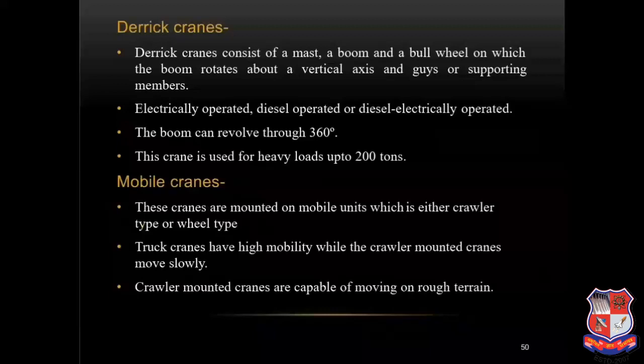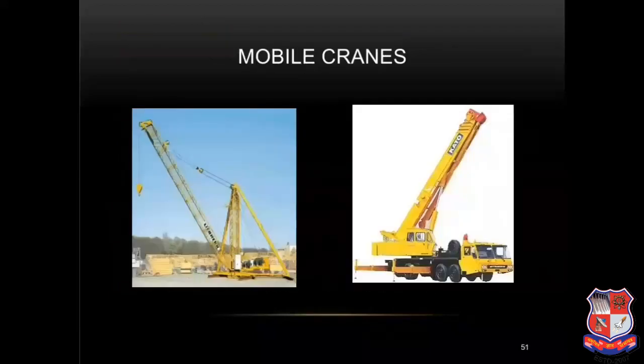Derrick cranes consist of a mast, a boom and a bull wheel on which the boom rotates about the vertical axis, and guys or supporting members. They can be electrically operated, diesel operated, or diesel-electric operated. The boom can revolve through 360 degrees. This crane is used for heavy loads up to 200 tons. Mobile cranes are mounted on a mobile unit which is either crawler type or wheel type. Truck cranes have high mobility while the crawler mounted cranes move slowly; crawler mounted cranes are capable of moving on rough terrain also.